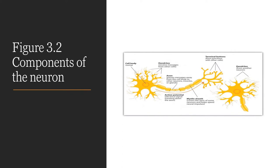Figure 3-2 shows the components of the neuron. On the left is the cell body, followed by the dendrites, which receive messages from other cells. The axon gives the neuron its length and is covered by the myelin sheath, which speeds up the impulse and insulates the axon. The terminal buttons release neurotransmitters — chemical messengers that facilitate transmission of information from one neuron to the next. Neurons never touch; they rely entirely on neurotransmitters to communicate.